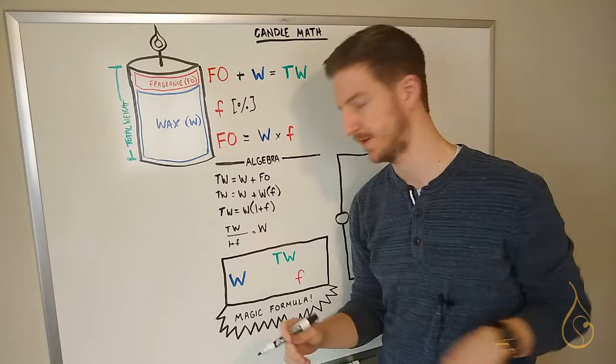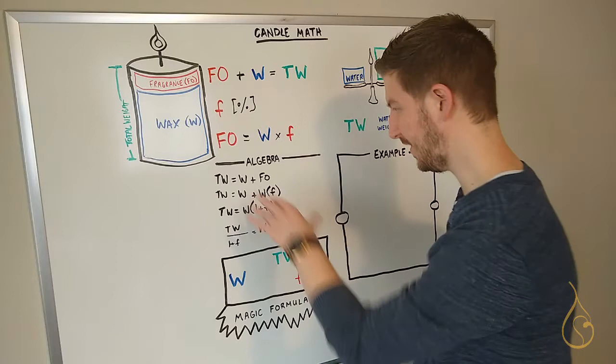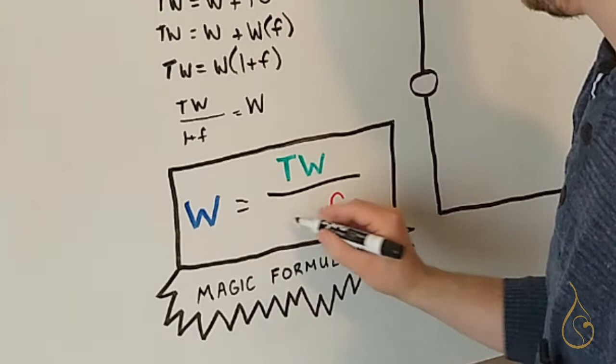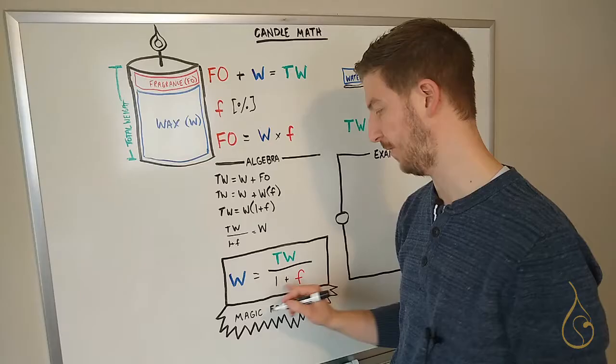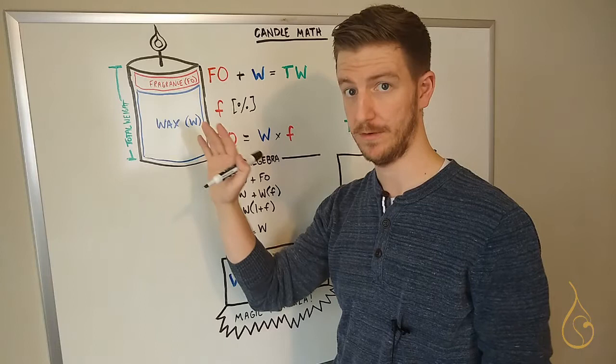Okay, that wasn't too bad, was it? So now we'll take this resolution here, which I kind of substituted all that stuff, algebra nonsense that if you don't care, you don't need to care. And if I take that and I apply it here, we know that our wax will actually be equal to the total weight divided by one plus our fragrance load or our percentage amount (W = TW / (1 + f)). And this will optimize it to be exactly the amount that this container needs.